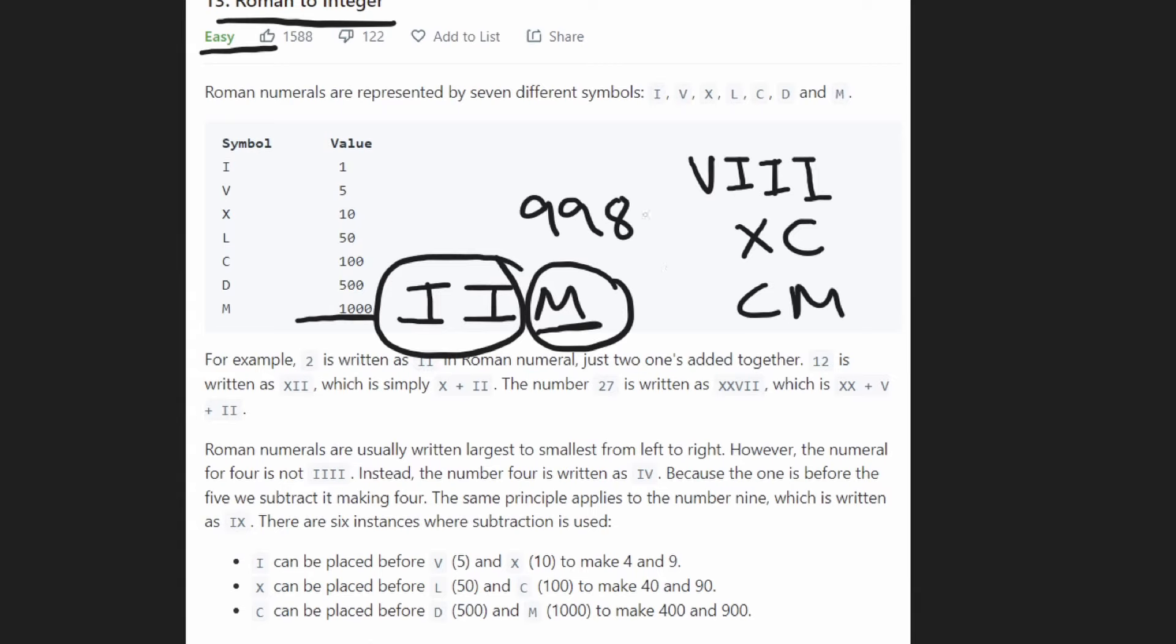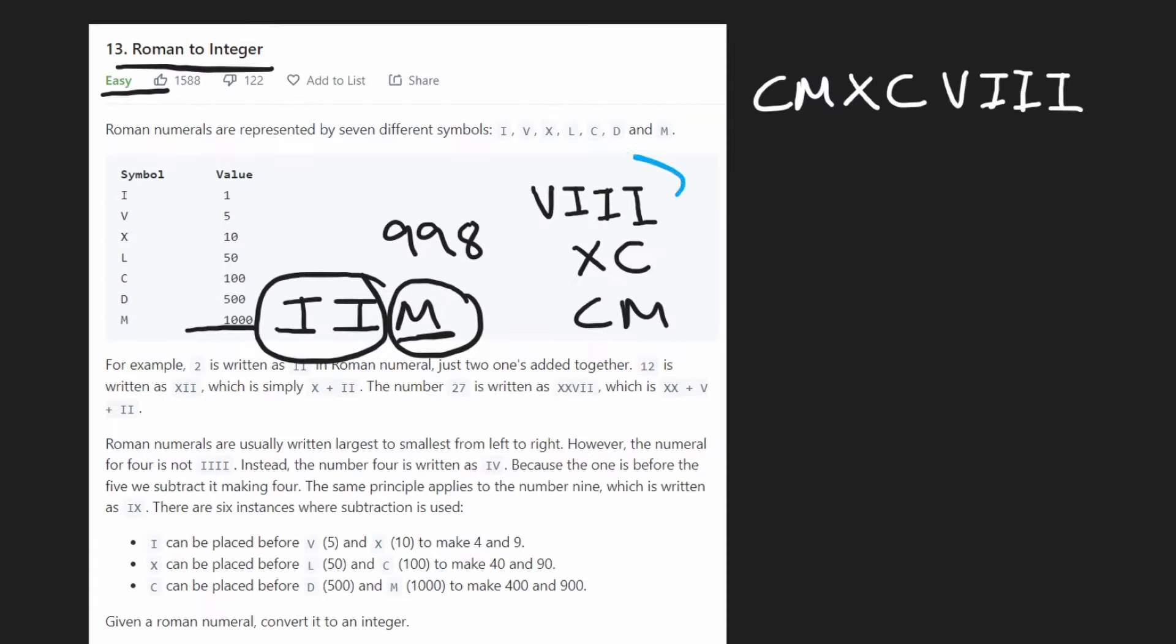And I think that's pretty much it. Once you know this idea that, okay, if a smaller value goes before a larger one, and we can only have a single one of those happening, then we're going to be subtracting that. Otherwise, we're going to be reading from largest to smallest. Then this problem becomes very straightforward. Literally, all you have to do is read the input string. So actually, I took this and rewrote it in the correct way. So this value equals 998.